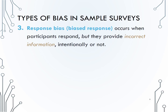A third type of bias to be aware of is called response bias. Response bias occurs when participants respond but provide incorrect information, intentionally or not. The incorrect information may have come from question wording, who is asking the question, or even misremembering an event.